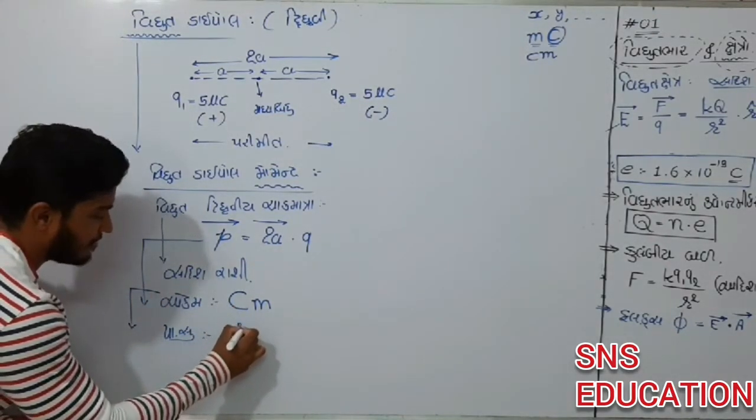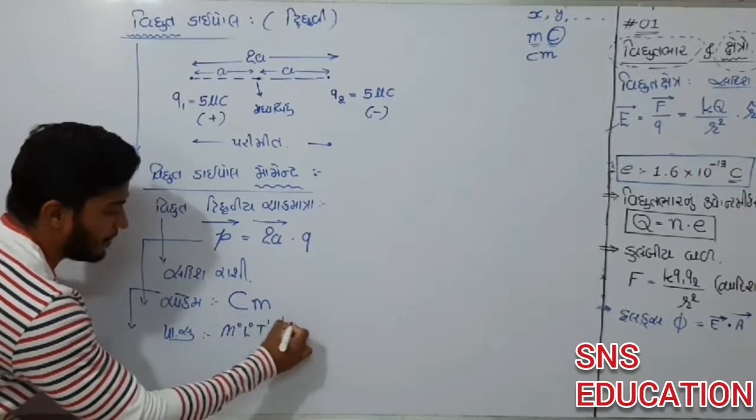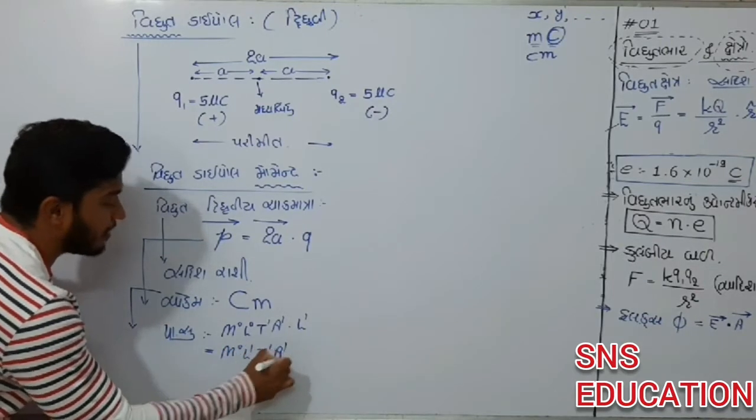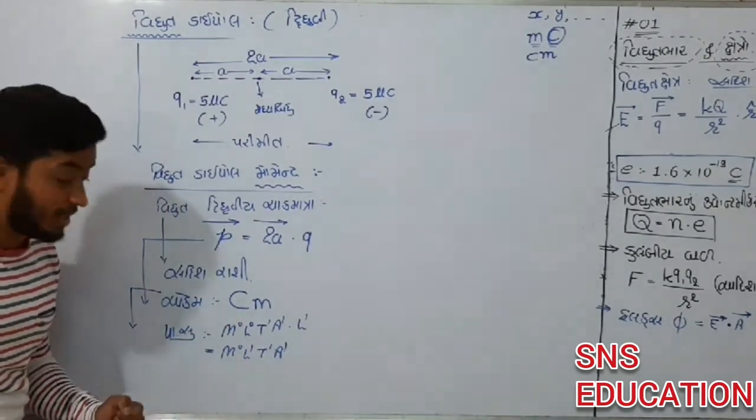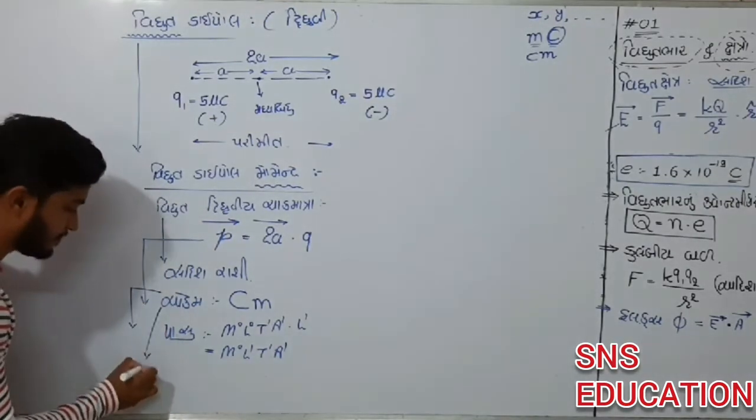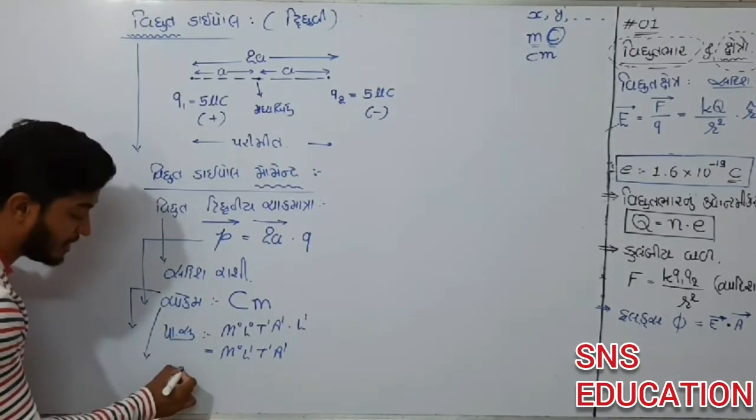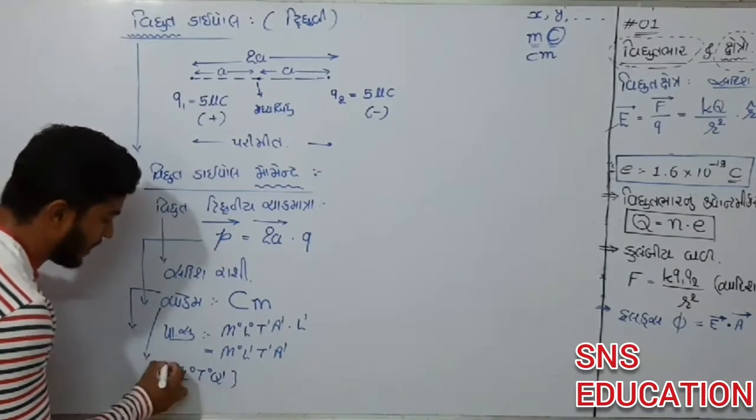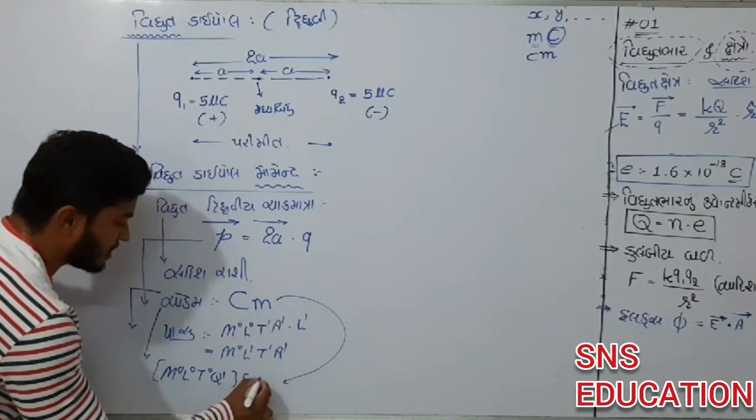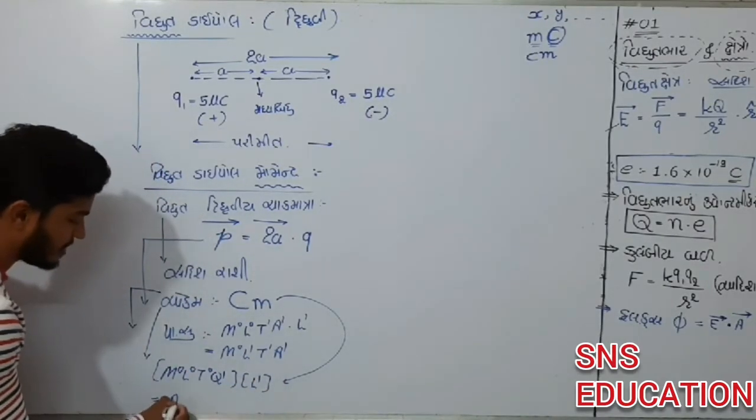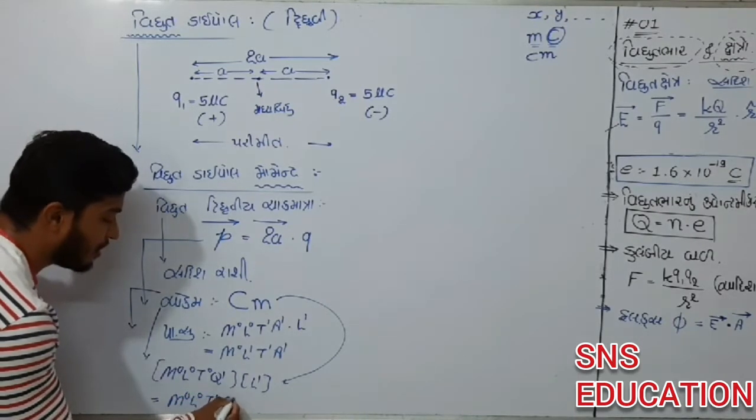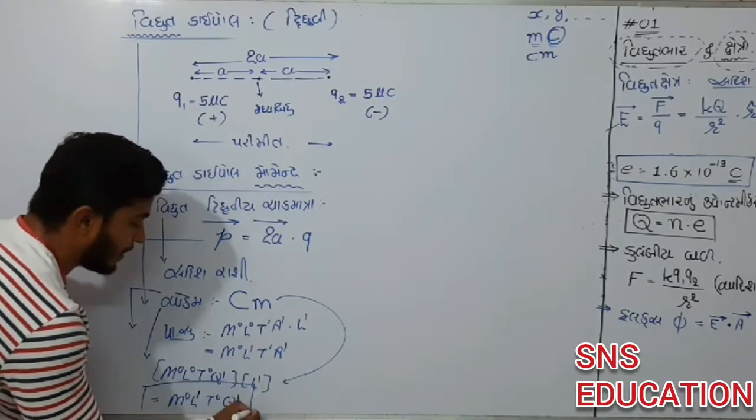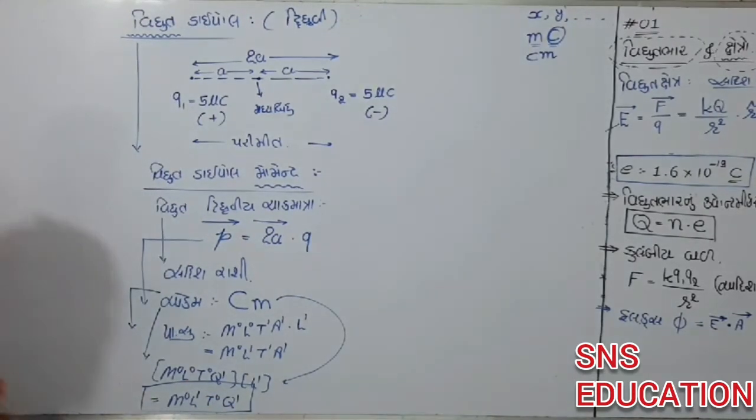So this problem is M0, L0, T1, A1. And then we are fully partial. So finally, answer ready. M0, L1, T1, A1. This problem is M0, L0, T0, Q1. These problems are M0, L0, T0, Q1. So now this problem brings you back.